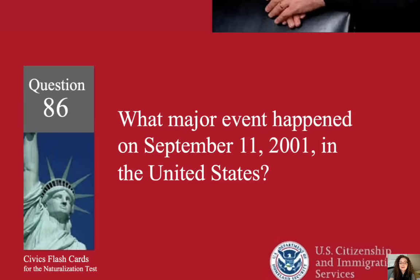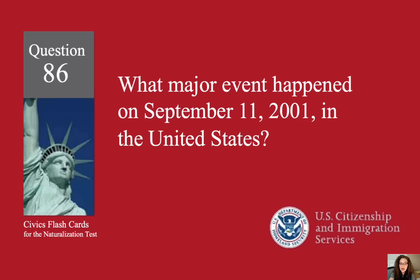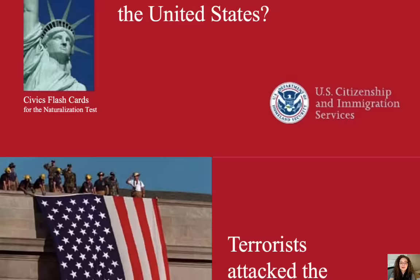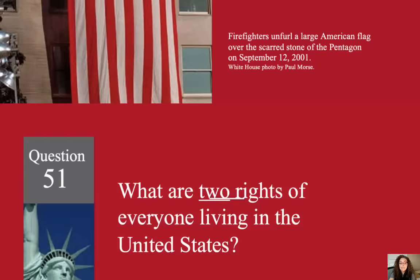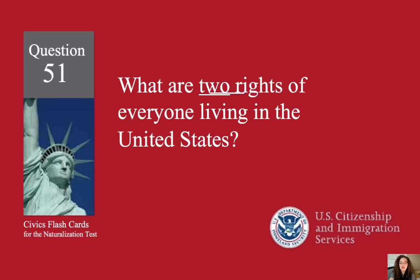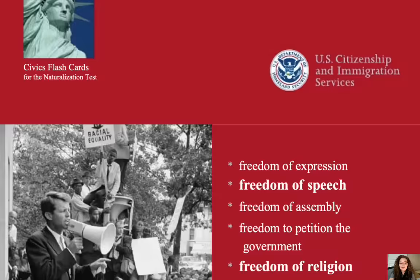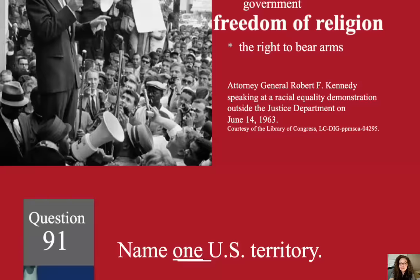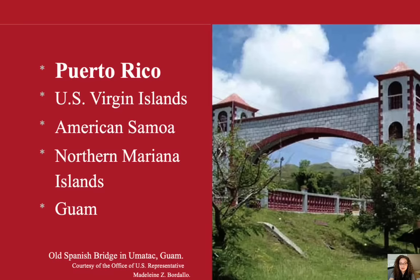What major event happened on September 11, 2001 in the United States? Terrorists attacked the United States. What are the two rights of everyone living in the United States? Freedom of speech and freedom of religion. Name one U.S. territory. Puerto Rico.